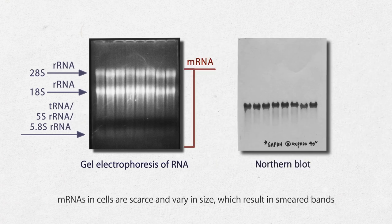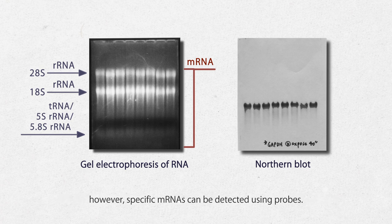mRNAs in cells are scarce and vary in size, which result in smeared bands. However, specific mRNAs can be detected using probes.